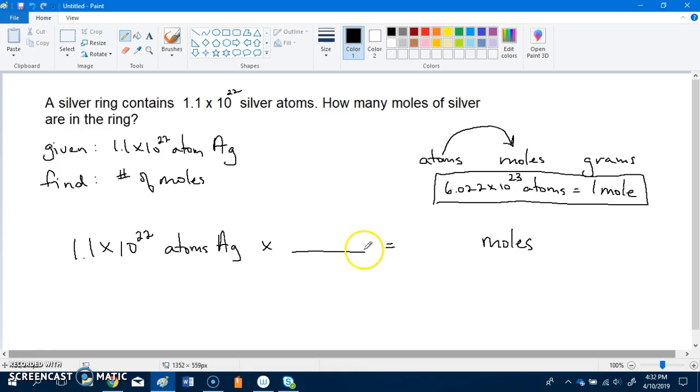And the question is which do we put on top, atoms or moles? Because we're trying to find moles we want that to be on top so that the atoms will cancel out on the bottom. So whatever unit you want to cancel out goes to the bottom of the conversion factor, whatever unit you want in the answer stays on top. So that means we're going to use 1 mole is equal to 6.022 times 10 to the 23 atoms.